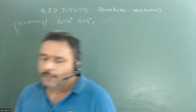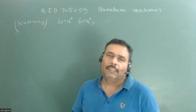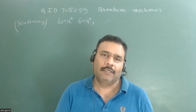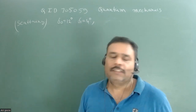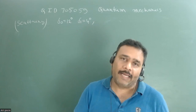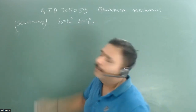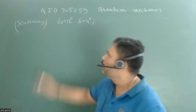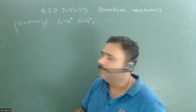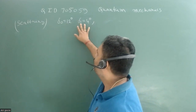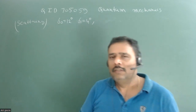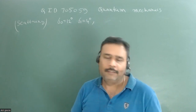In this problem, we have to identify the correct graph of differential scattering cross section versus polar angle theta. The given facts are: only two modes are active — l=0 and l=1. The phase shifts are δ₀ = 12° (for l=0) and δ₁ = 4° (for l=1). We need to apply our knowledge of the effect of the angular momentum quantum number l in scattering.